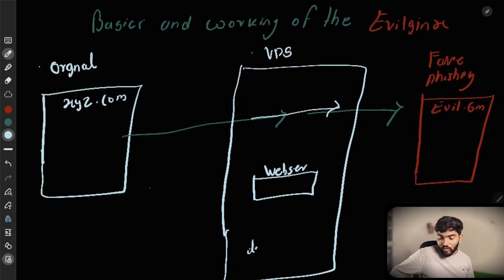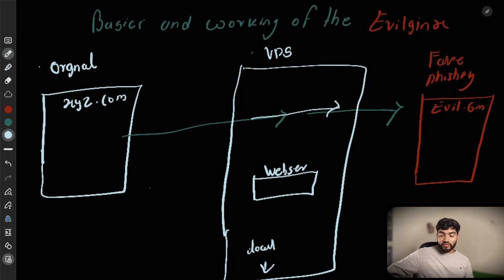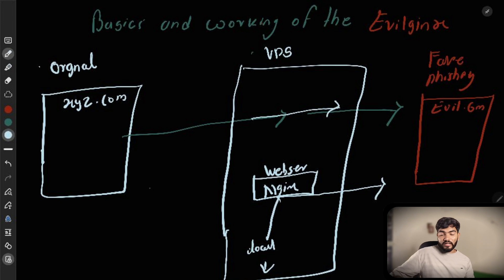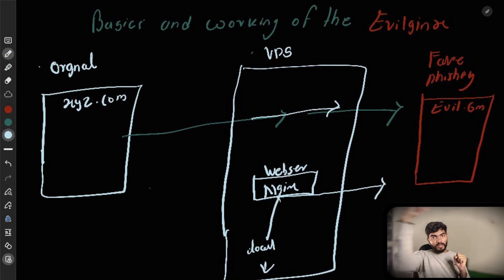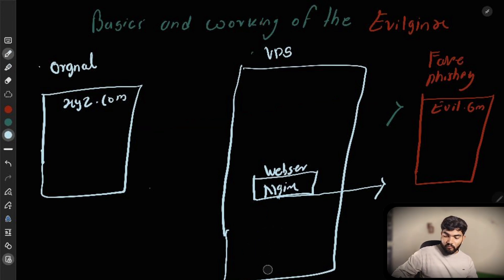What is a reverse proxy connection? If you host something locally on a computer, you need to expose it to the network so anyone can access it. What you do is send this local connection to a web server like Nginx, and then it converts it to a global connection. So the reverse proxy takes a local connection and converts it into a global connection.